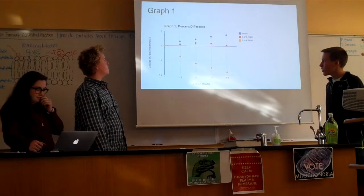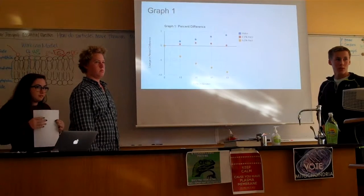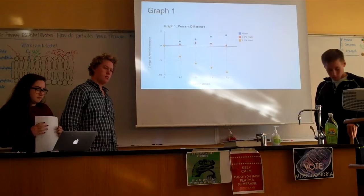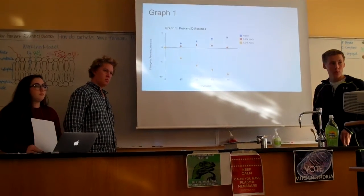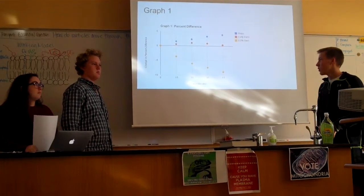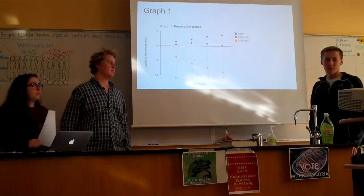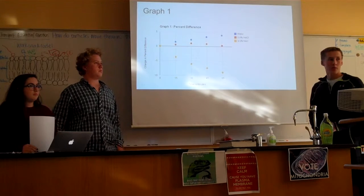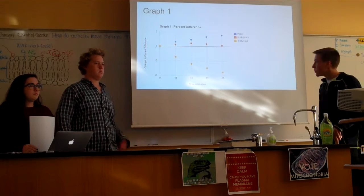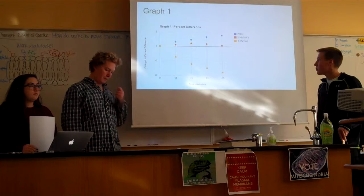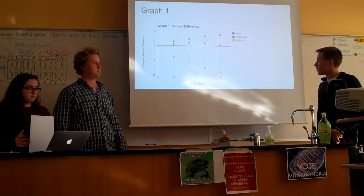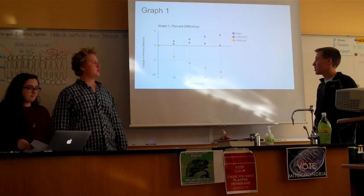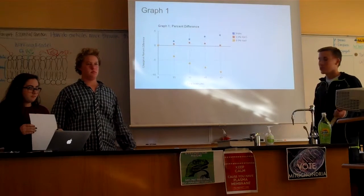Question: how did you get the percent difference for each point — did you subtract the same initial mass each time or the previous time's mass? We subtracted the same initial mass, so that's showing cumulative change over time. Which one had the fastest rate of diffusion? Probably the 0.9% NaCl, because it changed the most over time.